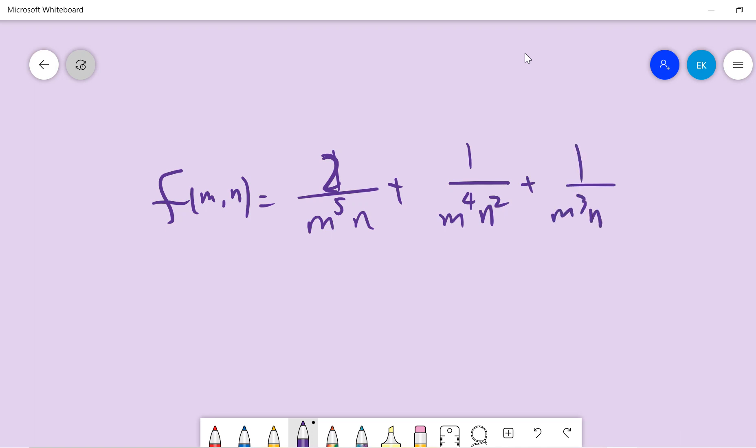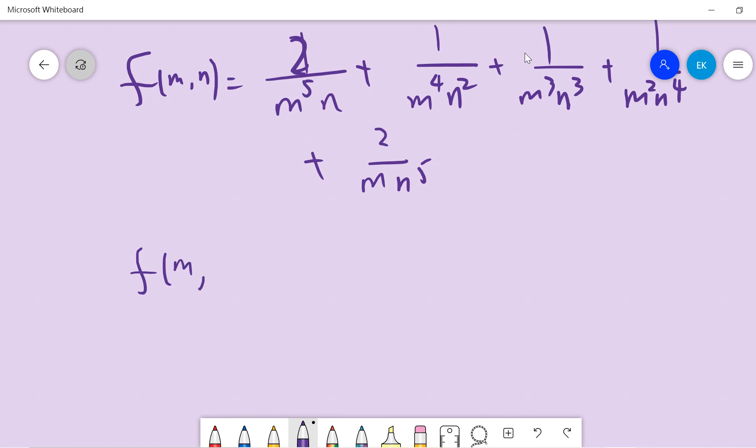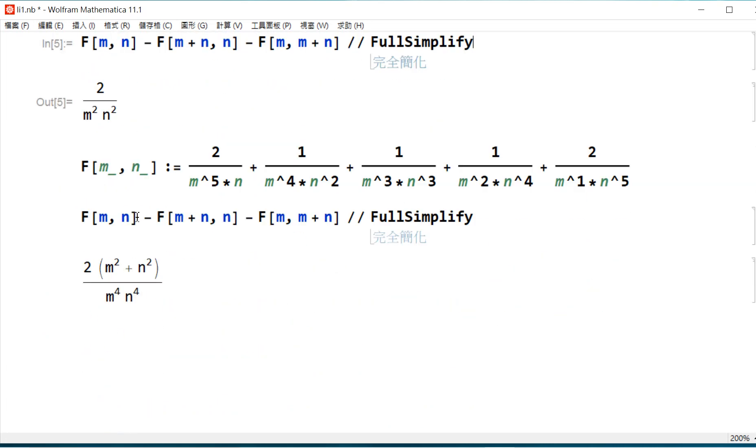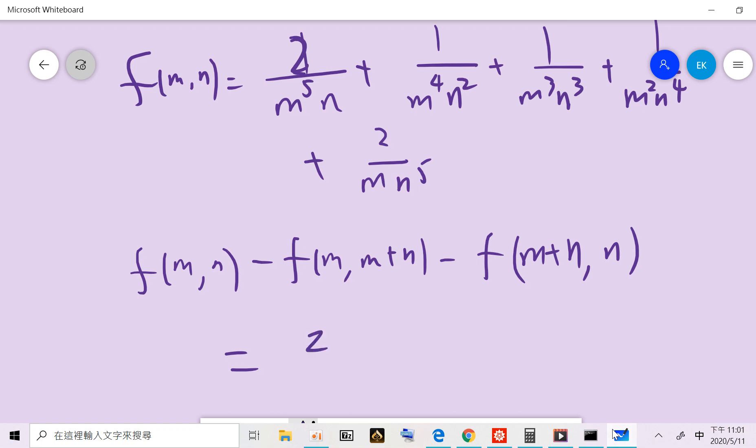Okay, so this is what we want to compute. The standard approach is that we calculate this object. It's very complicated, so you can use Mathematica to compute. Suppose you have this function and you calculate it via Mathematica, then you get the answer is 2 times m squared plus n squared over m to the 4th and n to the 4th. So we get 2 times m squared plus n squared, m to the 4th and n to the 4th.